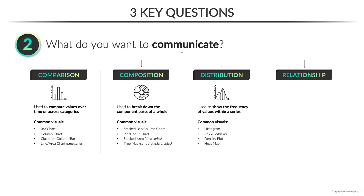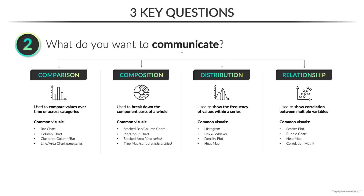Distribution visuals are useful when you want to show the frequency of values within a series. By far the most common and effective visual for showing distributions is the histogram, but there are others as well, like box and whisker charts, density plots, violin charts, or heat maps. And last but not least, relationship visuals help you show correlation between multiple variables. This is typically done using scatter plots or variations like bubble charts, but you might also use a heat map or correlation matrix to show a relationship as well.